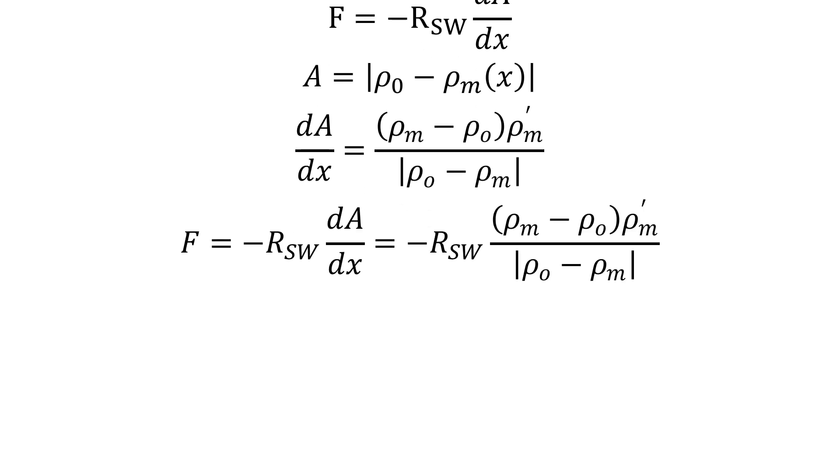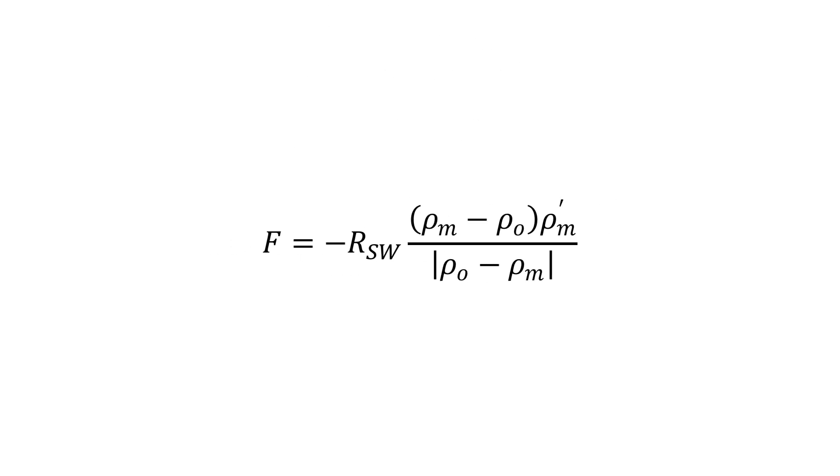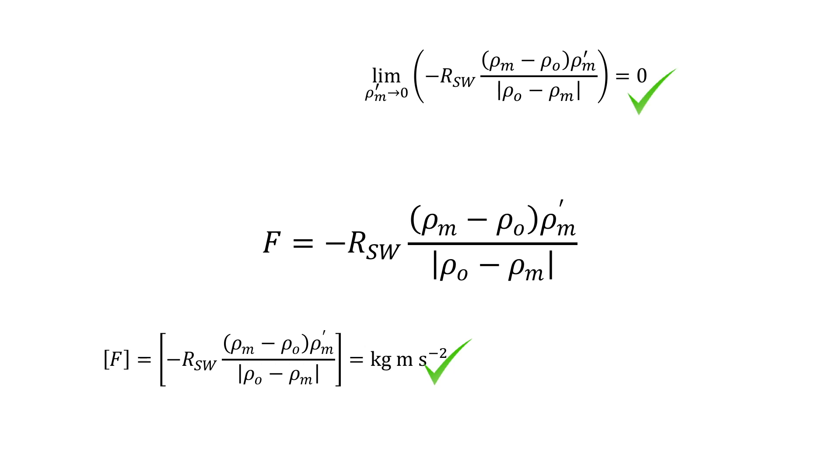We now have an expression for force as well then. We can do a sanity check and find that the units on the right hand side are indeed kilogram meters per second squared, and ρ' sub m is the derivative of the medium's density, so if this is zero then the gradient is zero and then there's no force, and this all seems rather sensible to me so let's move on.